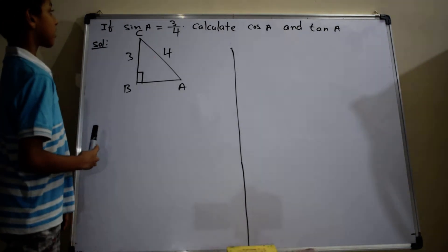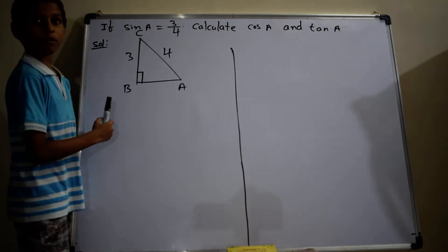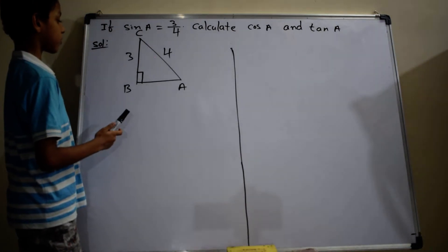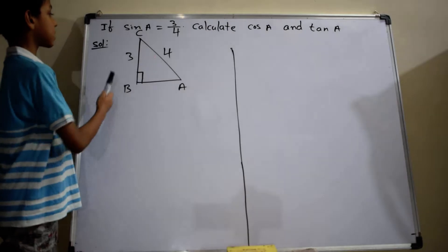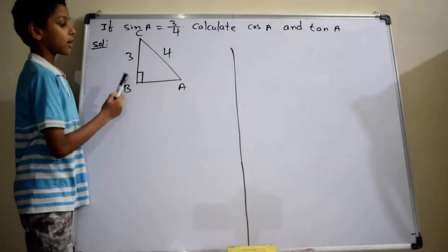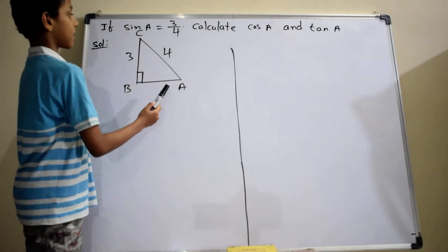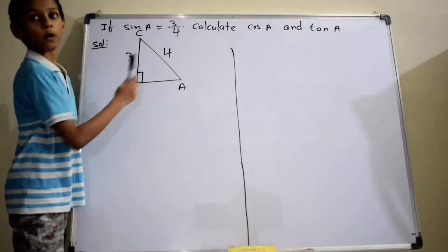Solution: given that sin A equals 3 by 4, so BC is equal to 3 and AC is equal to 4.